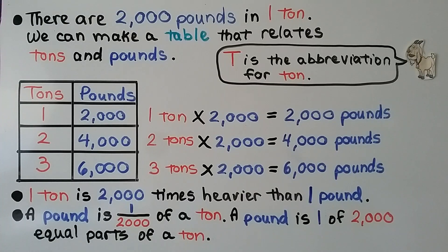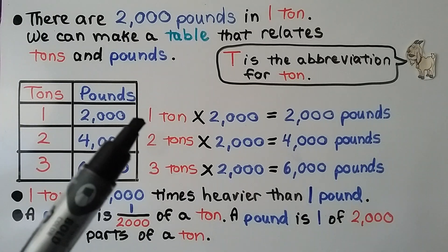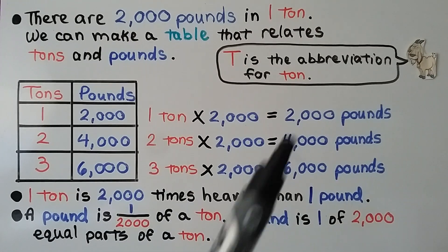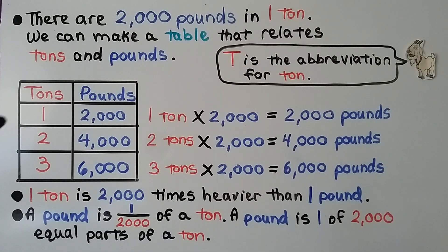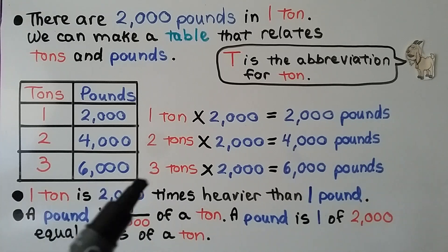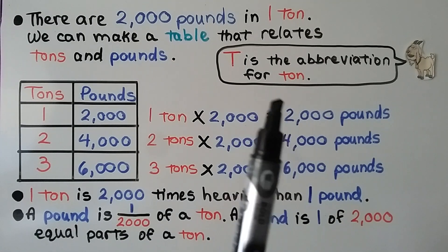There are 2,000 pounds in one ton. We can make a table: one ton equals 2,000 pounds; two tons equals 4,000 pounds; three tons equals 6,000 pounds. The capital T is the abbreviation for ton.